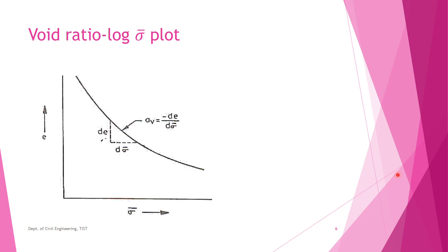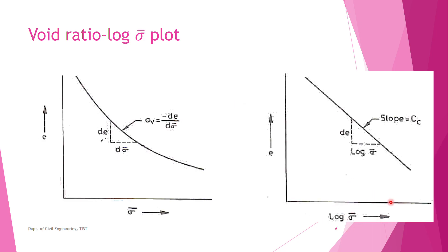Now we will discuss the variation of void ratio and effective stress. If you plot effective stress (σ̄) versus void ratio (e), you will get a curve. If instead you plot log σ̄ versus e, you will get a straight line. This shows the variation of void ratio e with effective stress σ̄.